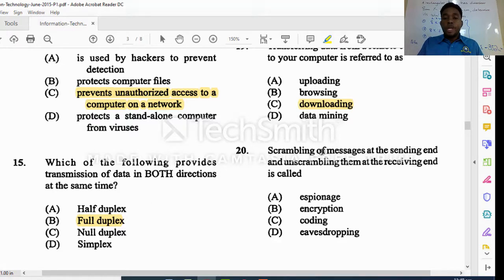Scrambling of messages at the sending end and unscrambling them at the receiving end is called what. Espionage refers to spy. Encryption, as it says, scrambling your messages and unscrambling the message at the receiving end would be referred to as encryption. Coding is different, you're changing the data. Eavesdropping is listening to a conversation that you are not a part of.